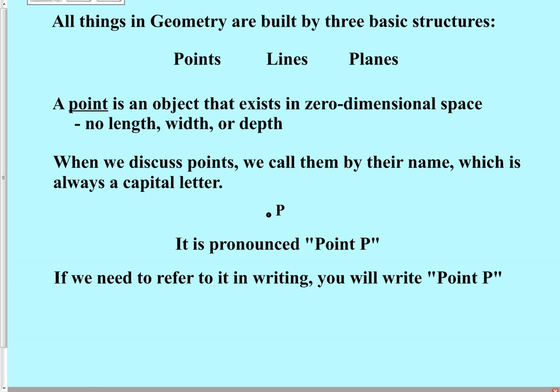Euclid basically boiled everything down in geometry to three basic structures: the point, the line, and the plane. These are the most basic structures in the geometric world. A point exists in zero-dimensional space because it has no length, no width, no depth. A line is first-dimensional space because it has length but no width and no depth. A plane is second-dimensional space because it has length and width but no depth.